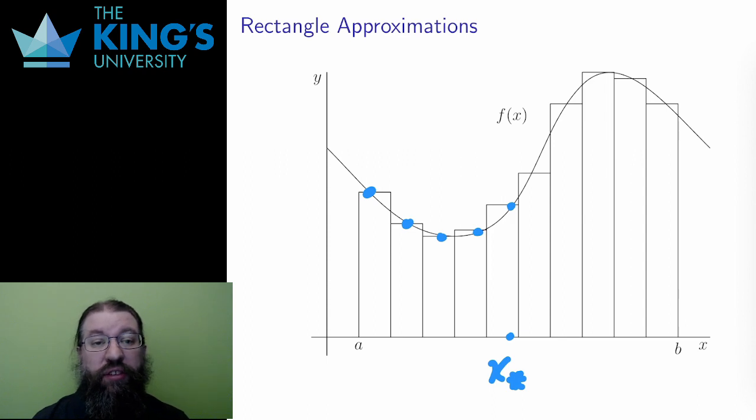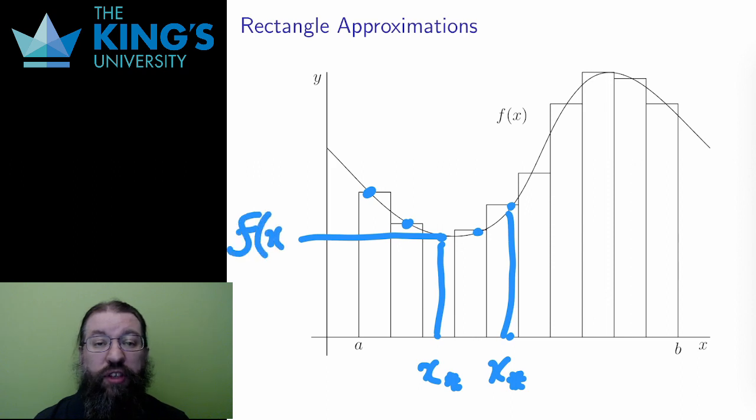Each point in each little piece of the domain for each rectangle will lead to a height f of x star. Different heights will produce different rectangles and different approximations, but I'm hoping in the limit that this will all work out. So x star is just some point in each subinterval, a little piece of the interval from a to b at the bottom of each rectangle. So then the area of each rectangle is width times height, b minus a over n times f of x star.